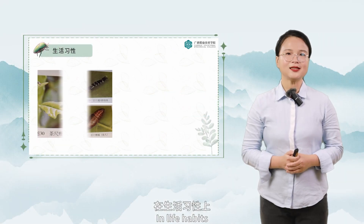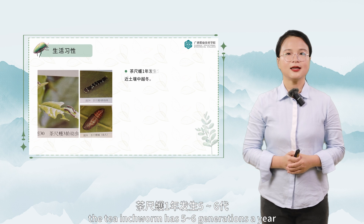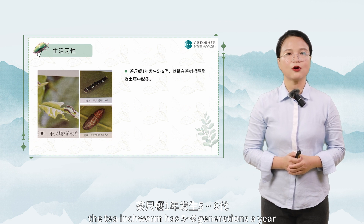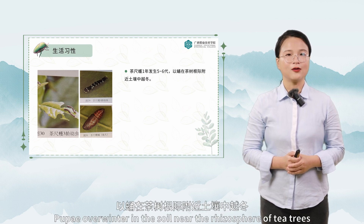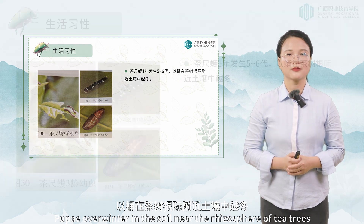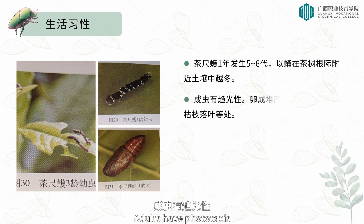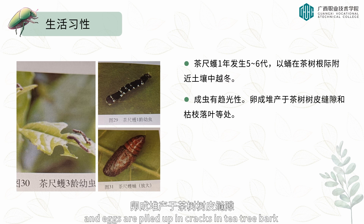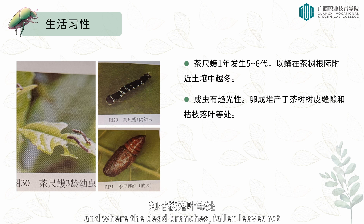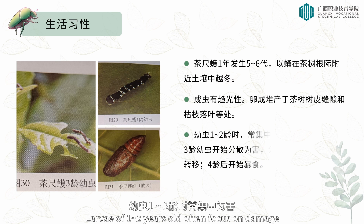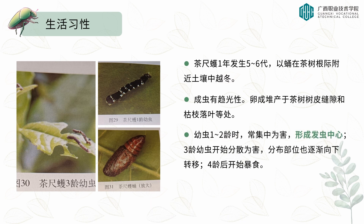In terms of life habits, the tea inchworm has five to six generations a year. Pupae overwinter in the soil near the rhizosphere of tea trees. Adults have phototaxis, and eggs are piled up in cracks in tea tree bark and where dead branches and fallen leaves rot.